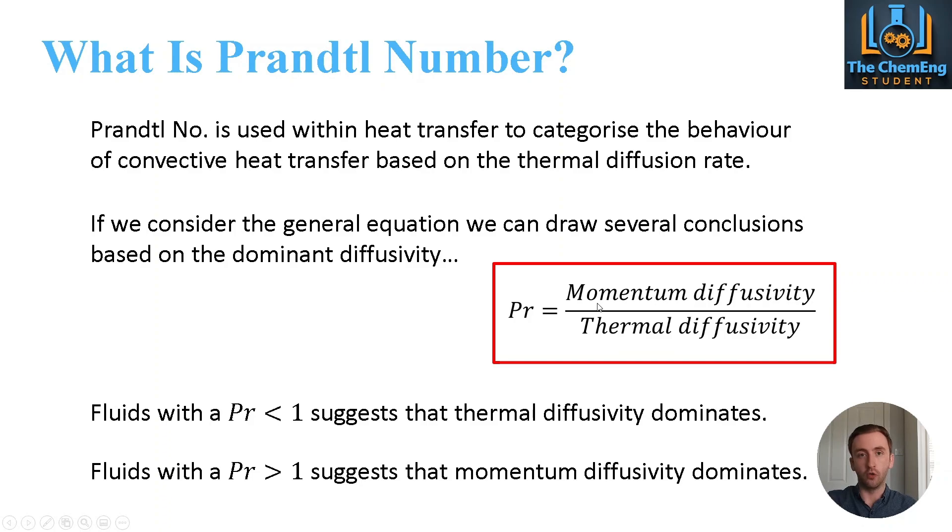If we have fluids that are greater than 1, then that tells us that momentum diffusivity will be the dominant of the two. That's quite important for when you come to look and analyse your Prandtl numbers for different types of fluids because you have a wide range of Prandtls depending on whether you have gases or whether you have liquids.